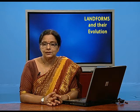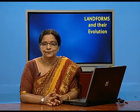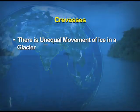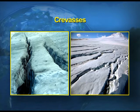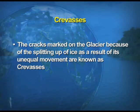First, we take up crevasses. There is unequal movement of ice in a glacier — the top of the ice moves much faster than the bottom, and the ice in the center also moves faster than the ice along the sides. On the screen you can see a visual of crevasses, showing how these deep gullies are formed. These are cracks formed on the glacier because of the splitting up of ice as a result of its unequal movement.